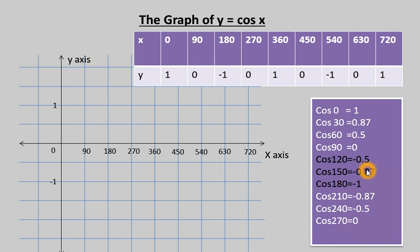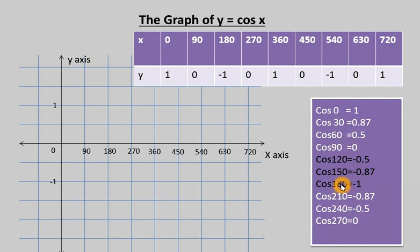Continuing: cos 120 = -0.5, cos 150 = -0.87, cos 180 = -1. So from 90° to 180°, the value is also decreasing, from 0 to -1. Then from 180° to 270°: cos 210 = -0.87, cos 240 = -0.5, cos 270 = 0. So from 180° to 270°, the values are increasing.